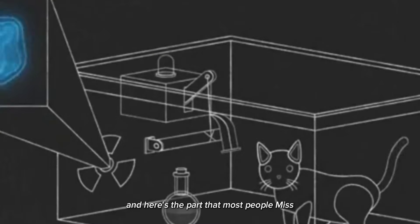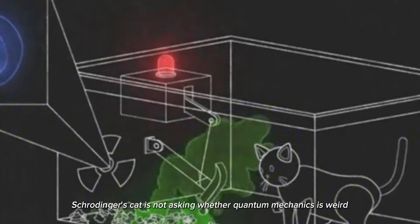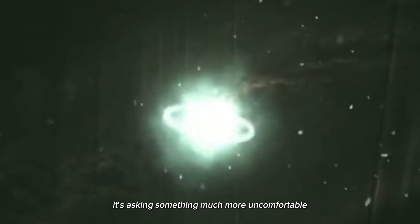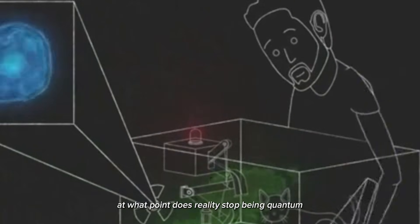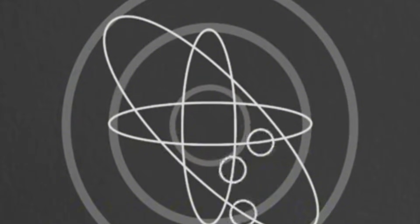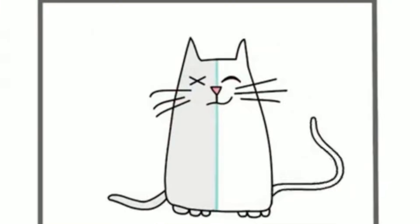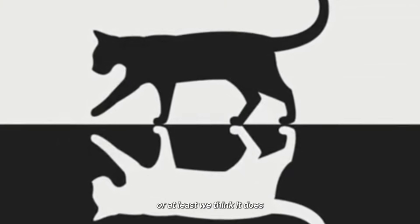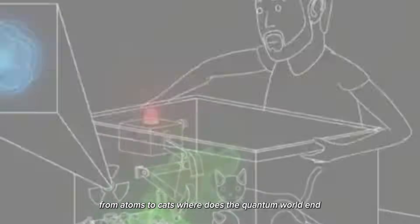And here's the part that most people miss. Schrödinger's cat is not asking whether quantum mechanics is weird. Everyone already knew that. It's asking something much more uncomfortable. At what point does reality stop being quantum and start being classical? Because somewhere between an atom and a cat, something changes. Or at least, we think it does. From atoms to cats, where does the quantum world end?